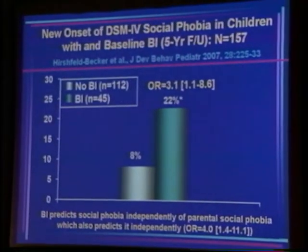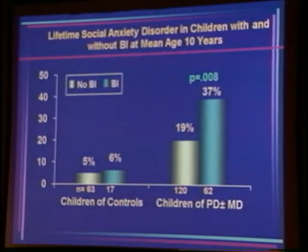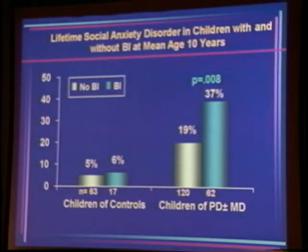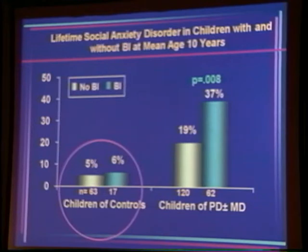Since the study was longitudinal, we also looked at new onset of social phobia. Among children who had no social phobia diagnosis at baseline, new onset was predicted by behavioral inhibition and also independently by parental social phobia. But once again, children of controls who had behavioral inhibition did not develop social anxiety — not enough power for a significant interaction, but still an interesting finding.